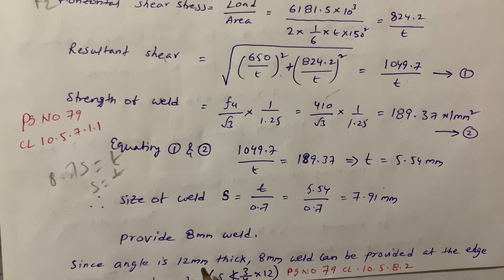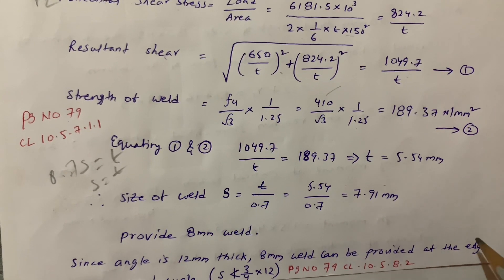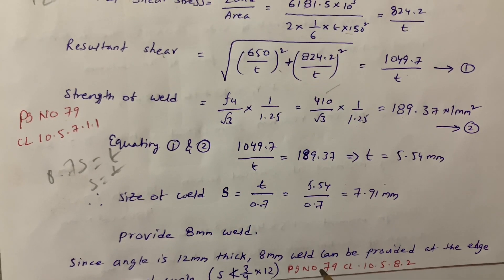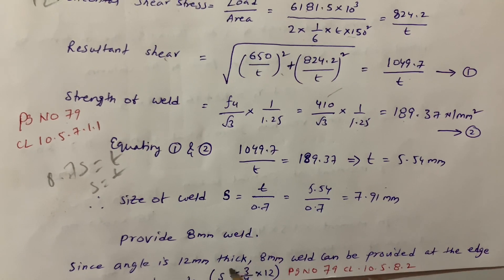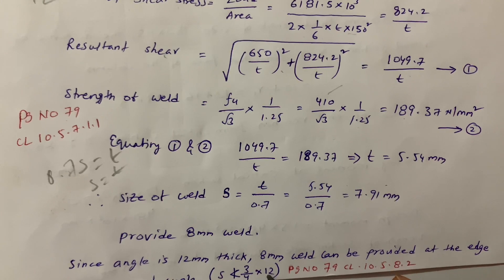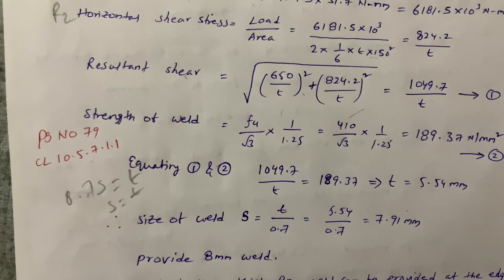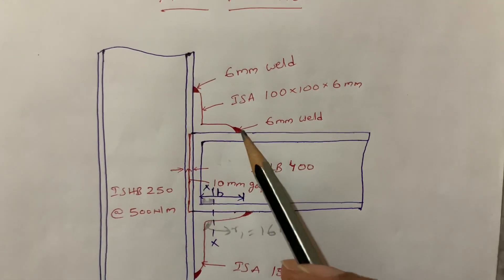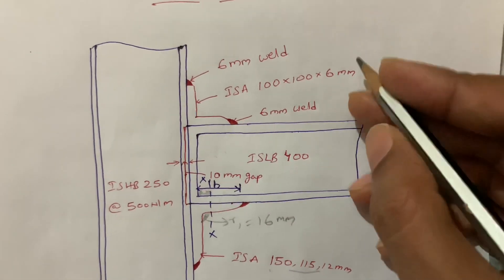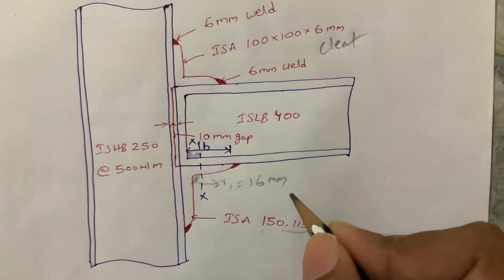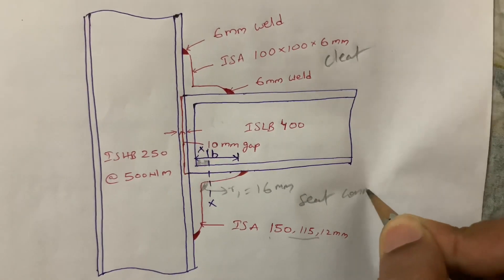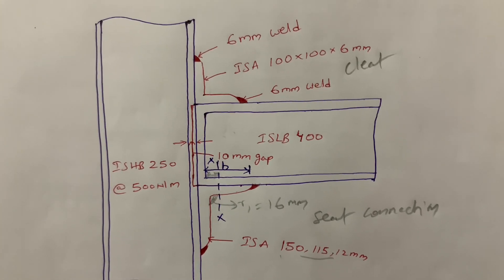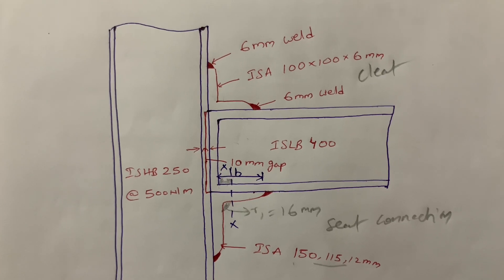The single angle is 12 mm thick. An 8 mm weld can be provided at the edge of the angle, satisfying the specification from page 79: S ≤ (3/4) × thickness. This condition is satisfied. Ultimately we have designed the unstiffened welded seat connection, with the cleat angle also designed. I hope you understood this. Thank you so much for watching.